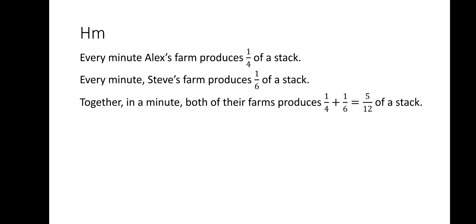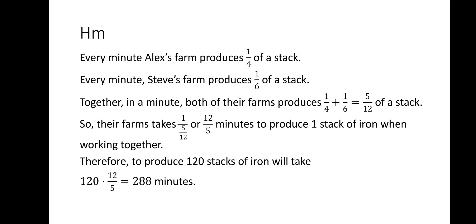Well, every minute Alex's farm produces 1/4 of a stack, and every minute Steve's farm produces 1/6 of a stack. So together, they form 1/4 plus 1/6 equals 5/12 of a stack. So it takes 12 over 5 minutes to produce one stack of iron when they work together. So therefore, to produce 120 stacks of iron, it will take 120 times 12/5 or 288 minutes. And that is our answer.